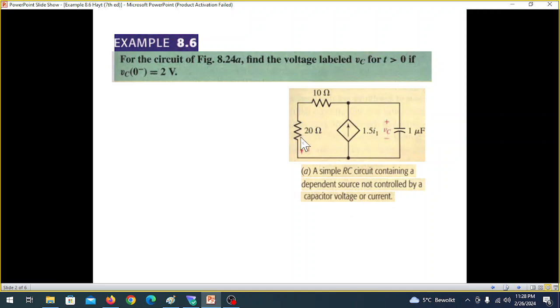So this dependent source is not controlled by VC. Rather, it is controlled by this current I1. Now in the book, two methods have been used. So I'll discuss both the methods. My job is only to try to simplify what has been done in the book so the students can easily understand.